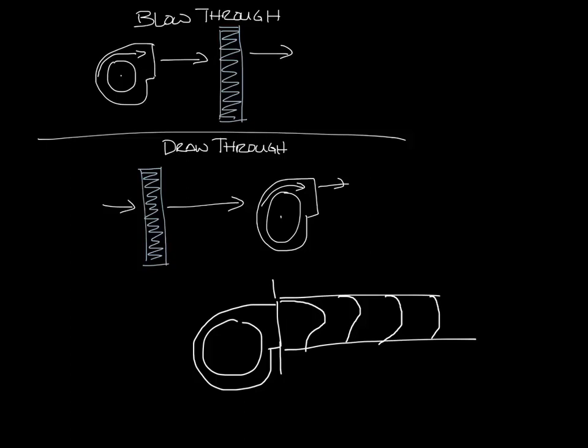On the inlet side of the fan the flow is coming in pretty uniform from all sides so at any point in the ductwork over here it would be about the same velocity.